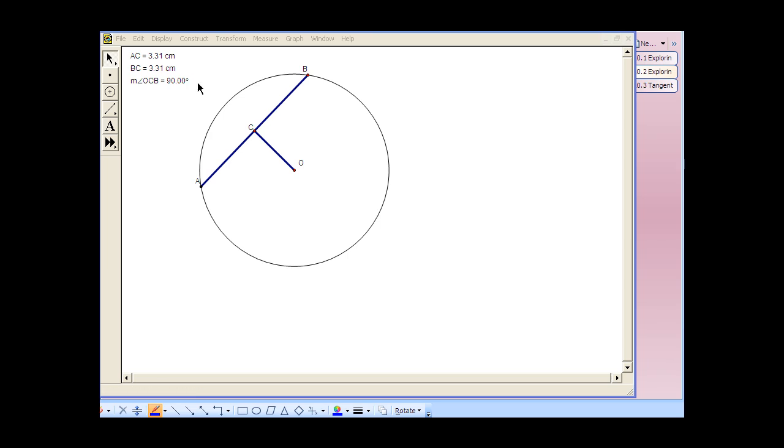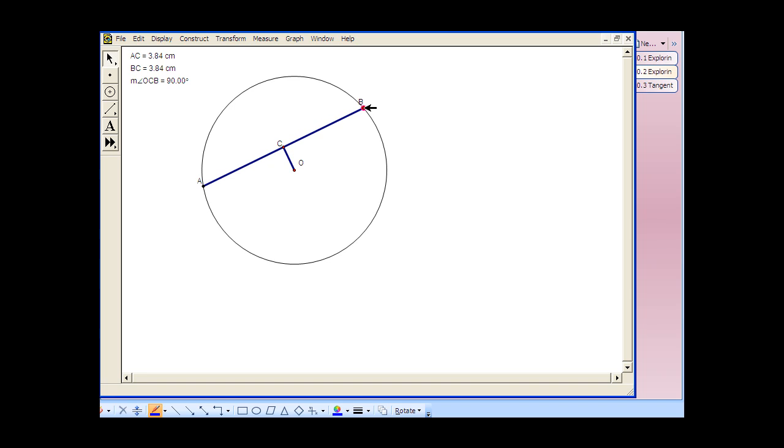And we can see that because measure of angle OCB is 90 degrees, and we can also see that the measure of AC is equal to the measure of BC, and that's indicated here. So if I grab point B, and I move that around the circle, take a look at the numbers. No matter where that chord is, that angle continues to be perpendicular, and it continues to be a perpendicular bisector.